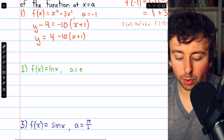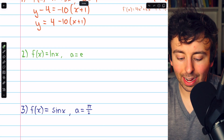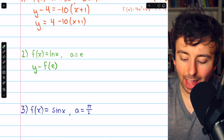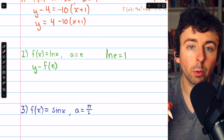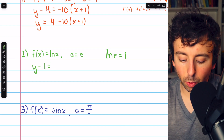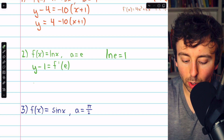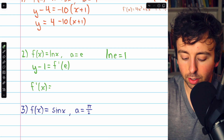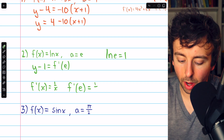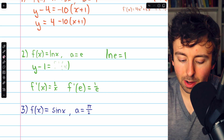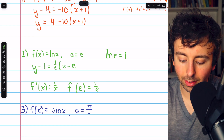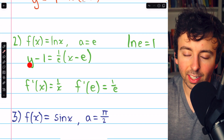Moving on to the next example: f of x equals ln x, and we'll find the linearization at x equals e. We begin with y minus the y coordinate. f of e is ln of e, which is just one, because e to the power of one produces e. So this is y minus one, equals the slope f prime of e. The derivative of the natural log of x is one over x, so f prime of e is one over e. We replace f prime of e with one over e, multiplied by x minus e.